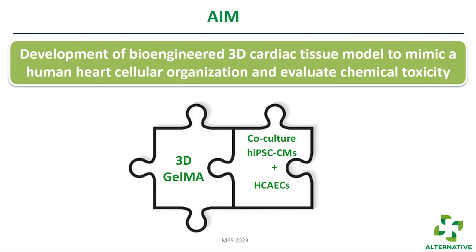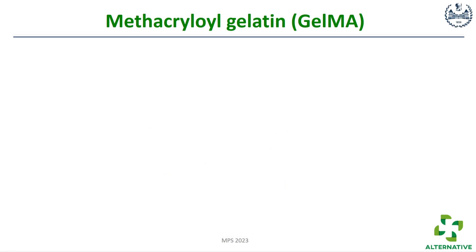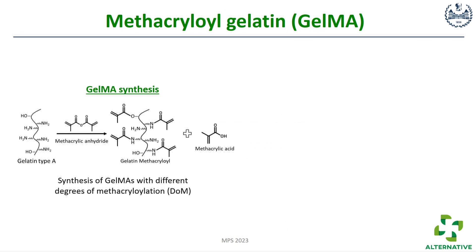In our project we want to develop a bioengineering 3D system to mimic the human cardiac cellular organization. As a first step, we will integrate GelMA — a 3D scaffold — with co-culture of cardiomyocytes derived from pluripotent stem cells and endothelial cells, which are supporting cells. The endothelial cells are also an important part of the heart system. From a materials point of view, GelMA is not a commercial product but is made by Polytechnic Turin, which is also the coordinator of the project.